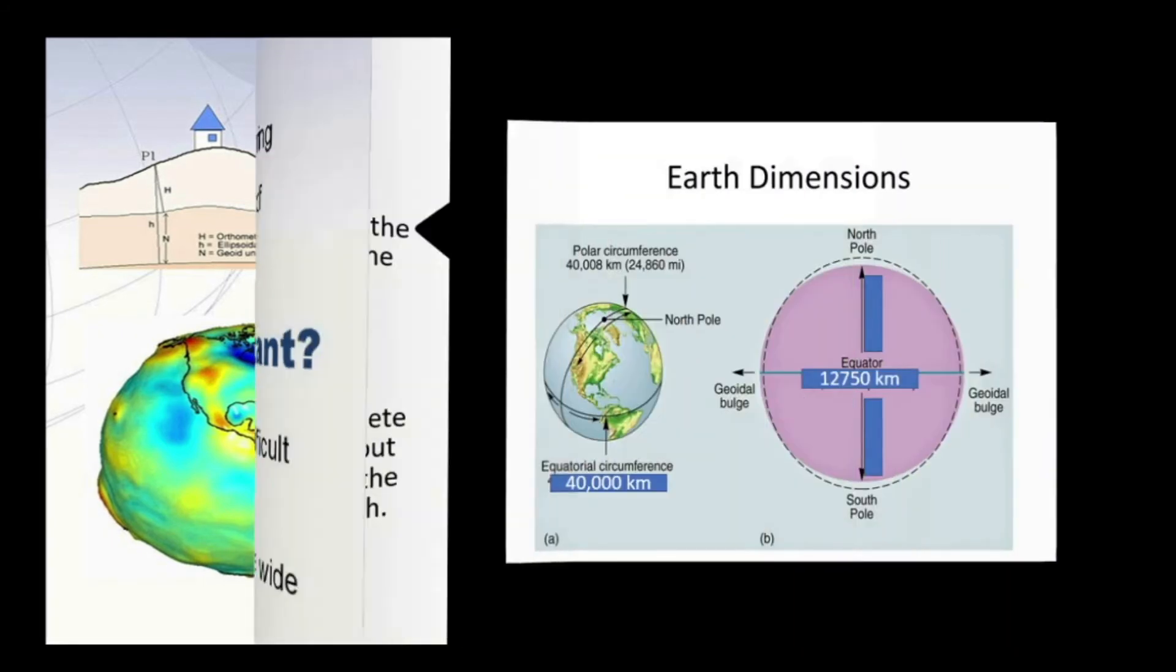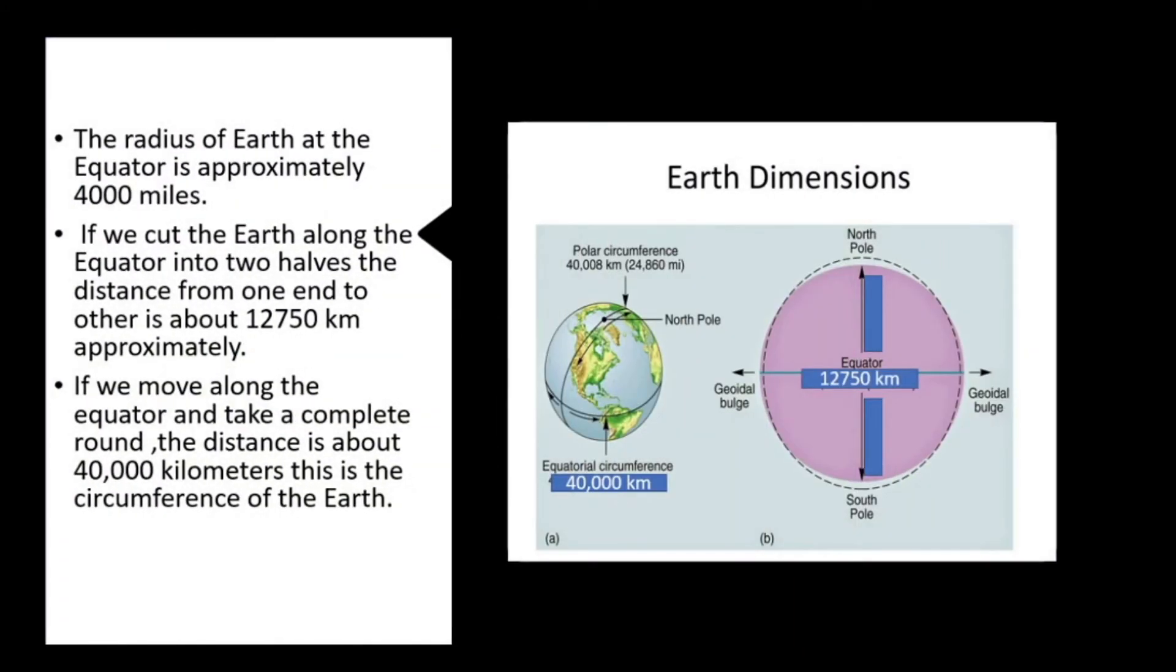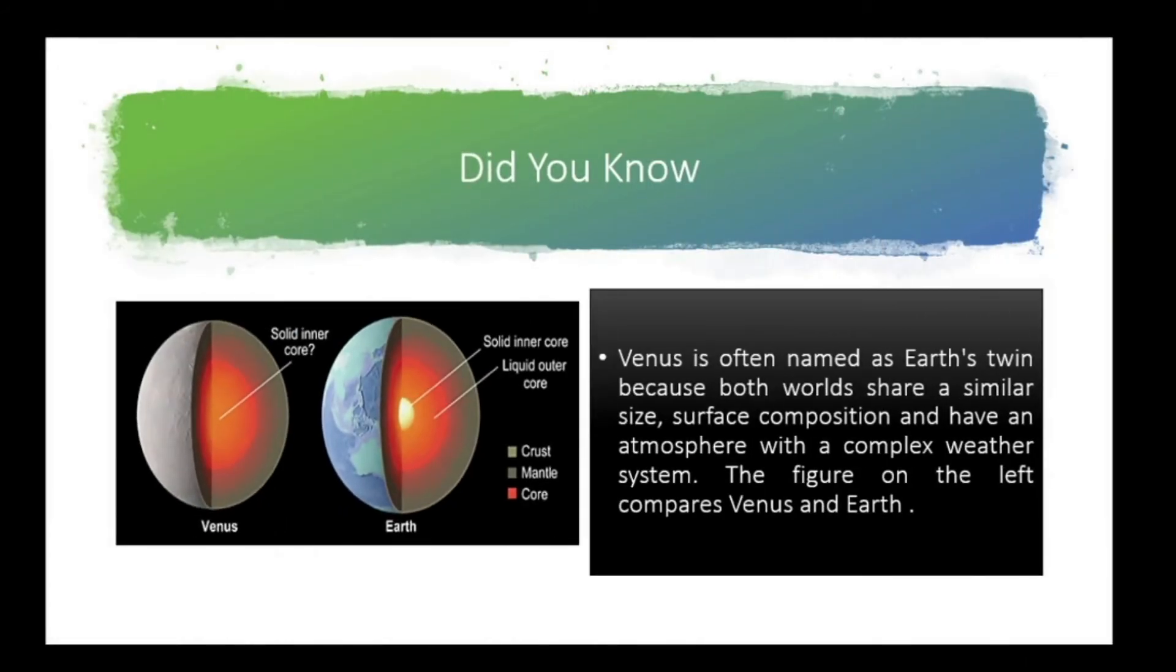Here are the dimensions of the Earth. The radius of the Earth at the equator is approximately 4,000 miles. If we cut the Earth along the equator into two halves, the distance from one end to another is about 12,750 kilometers. If we move along the equator and take a complete round, the distance is about 40,000 kilometers. This is the circumference of the Earth.